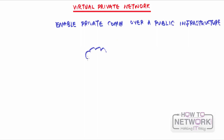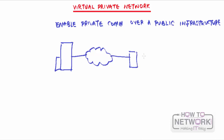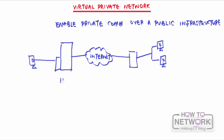So imagine you have the internet, and you have your HQ here and a branch here. Both of them will be connected to the internet because your users on your LAN would need to connect to the internet. The HQ is also going to have a LAN filled with users. Now this could be a public or shared network. But when the HQ wants to communicate with the branch, the information is supposed to be private, so you don't just want to send it over the internet unencrypted.